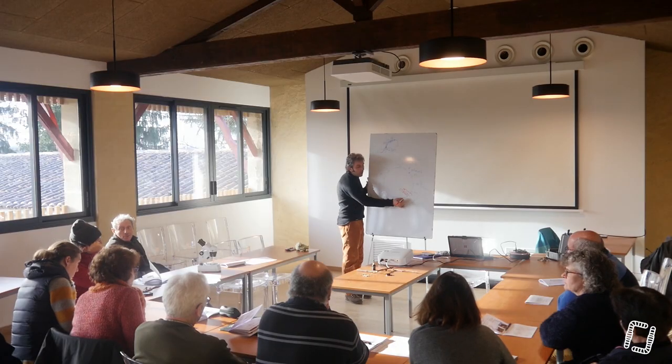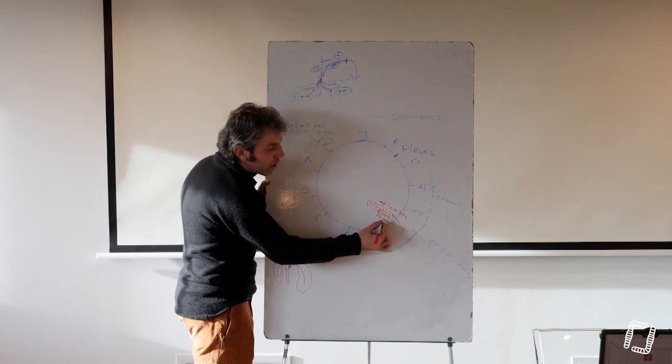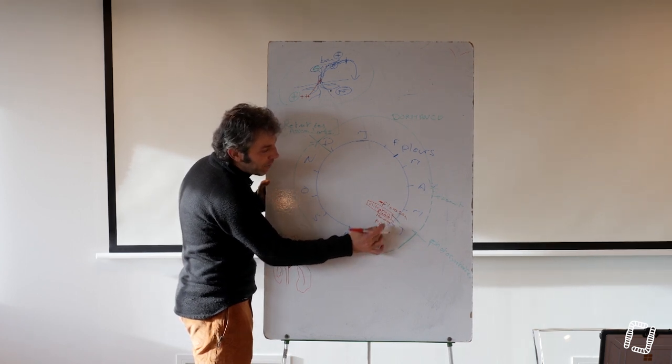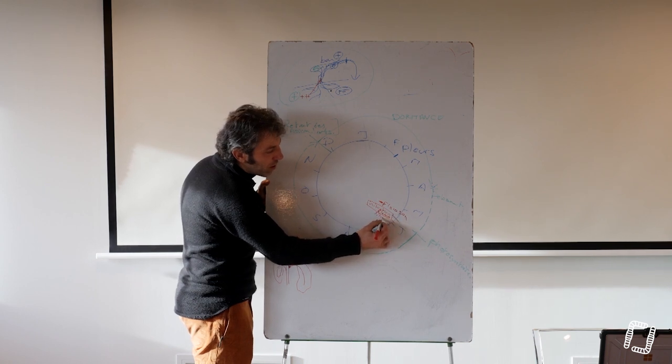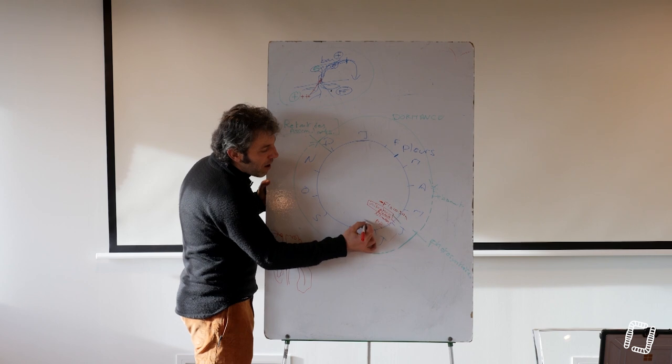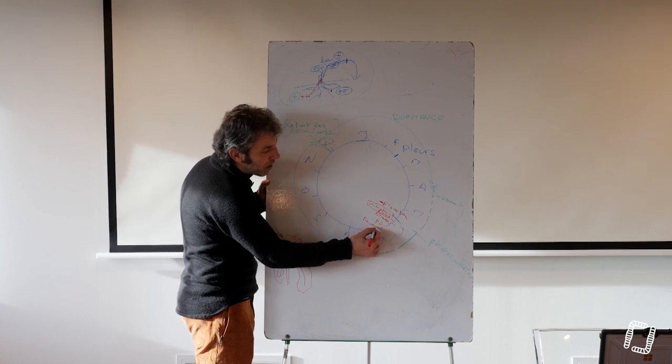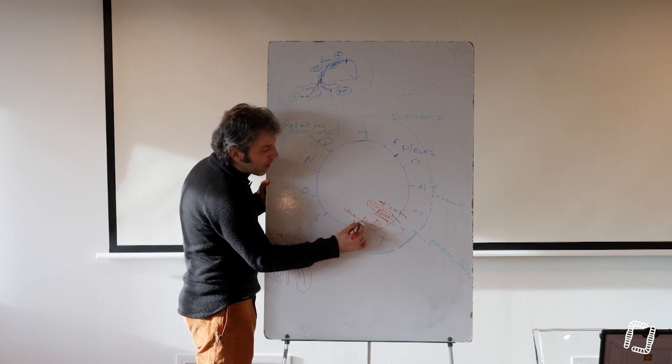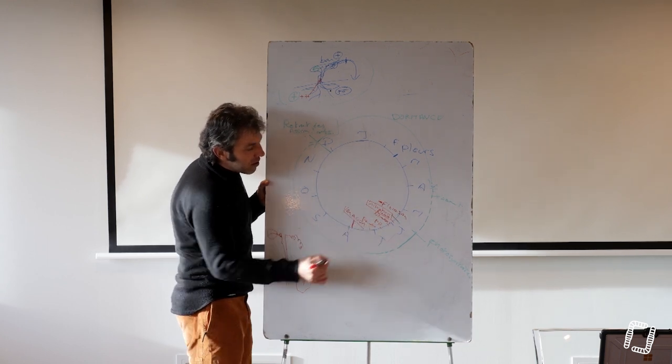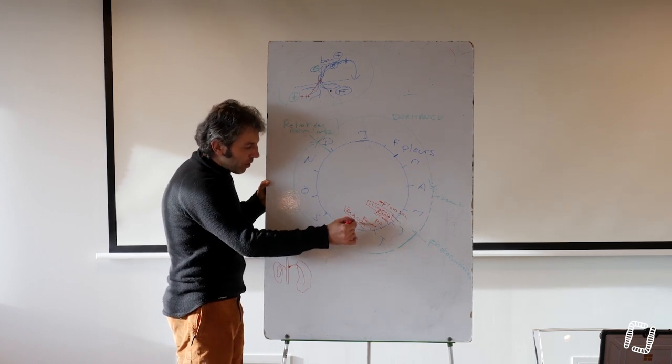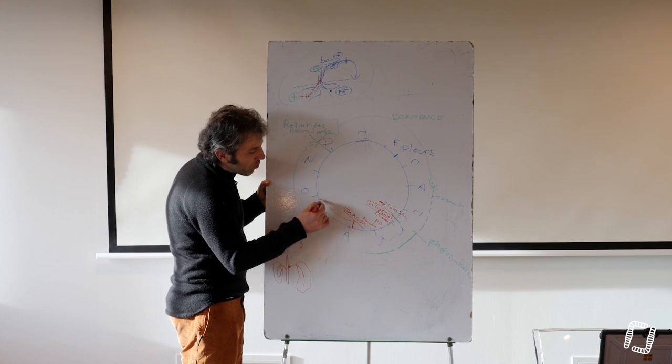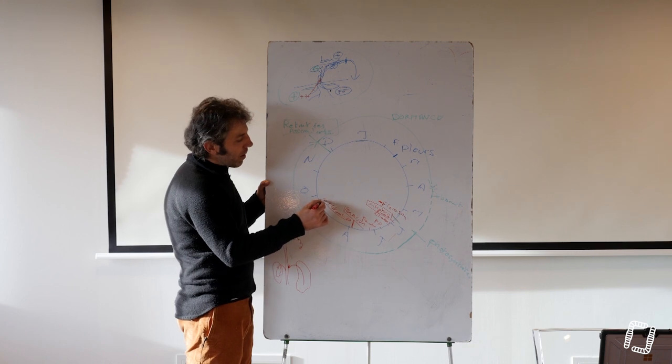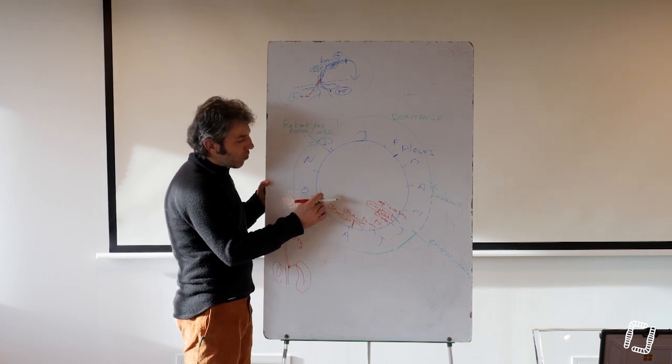Après l'initiation florale, on a tous les stades phénologiques: nouaison, petit pois, fermeture. Puis on a un moment important, véraison. Si on le met en rapport, on a maturation. La maturation, chez vous, ça va peut-être aller un peu plus loin. Je pense que ça s'arrête de consommer, mais il y a une phase de maturation un peu plus longue chez vous.